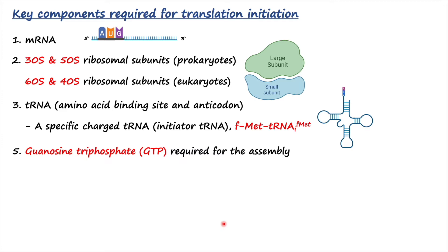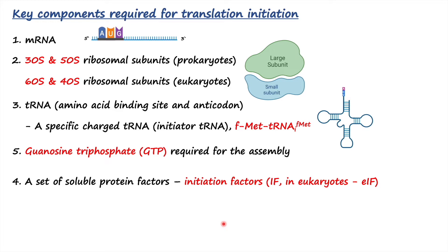The next important component is guanosine triphosphate, GTP. When GTP is hydrolyzed it releases energy, and that energy is utilized for initiation complex assembly. GTP is not only required for initiation but is also important for elongation and termination by providing energy.